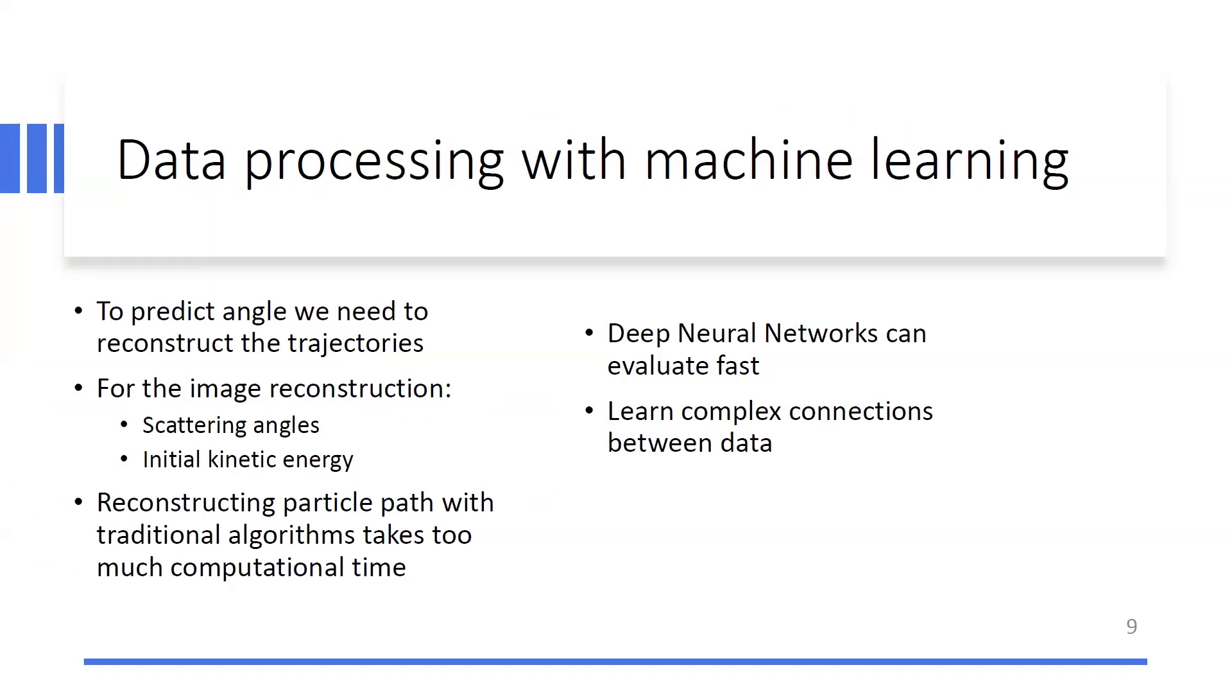Right now, we are trying to use machine learning algorithms to reconstruct these trajectories inside the detector system. The reason we decided to use some machine learning methods to do this because they are insanely fast when they are trained. So they can evaluate fast and they are able to learn complex connections between data, which we not necessarily know. So sometimes they can yield better results than one originally would expect.